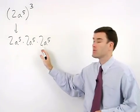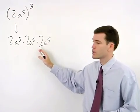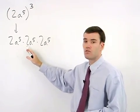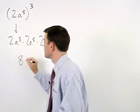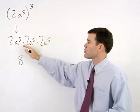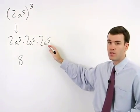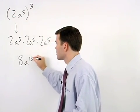And when multiplying these three terms together, simply multiply their coefficients. 2 times 2 is 4, times 2 is 8, and add the exponents. 5 plus 5 plus 5 is 15. So we have 8a to the fifteenth.